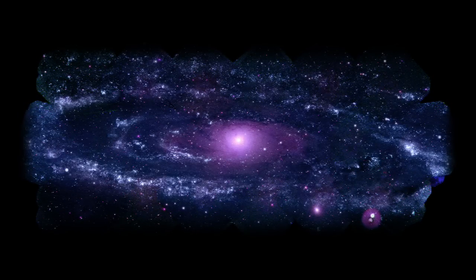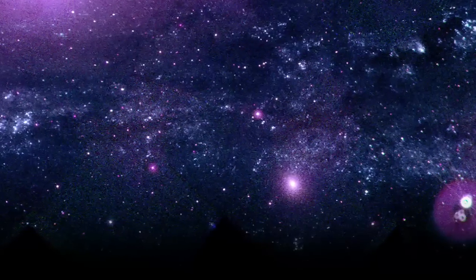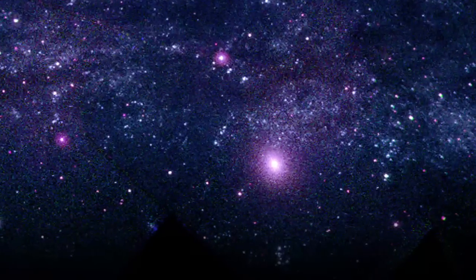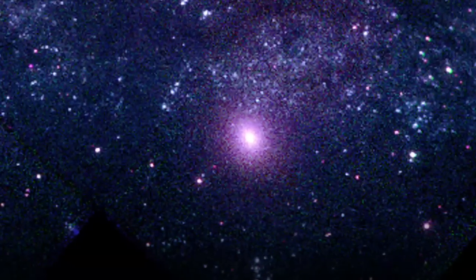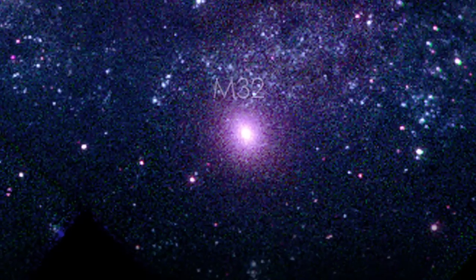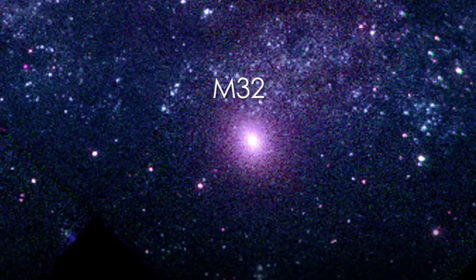Speaking of which, this is M32, one of many dwarf galaxies orbiting M31. These galaxies are usually not very bright in the ultraviolet because they lack young stars. But M32's core is so bright in the UV because it likely contains many blue and old stars.